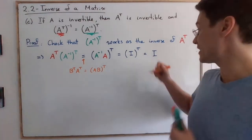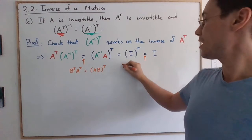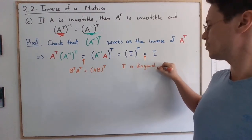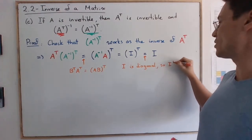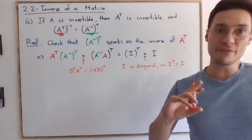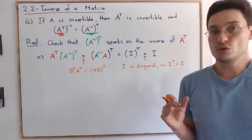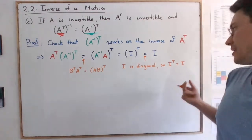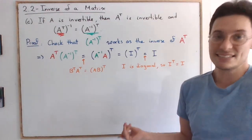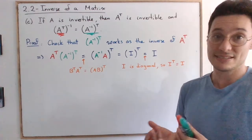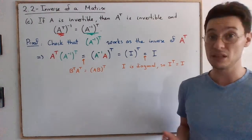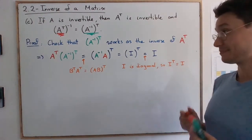So I^T equals I. Whenever you transpose something, you don't change its diagonal. That's why it works. You just change the off-diagonal elements. And since these are zero, regardless of whether they are above or below the diagonal, this is why you have that.